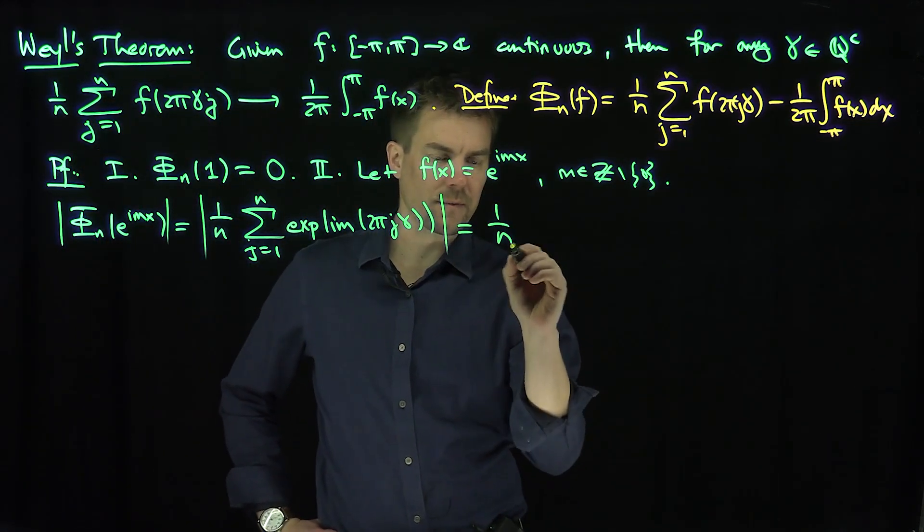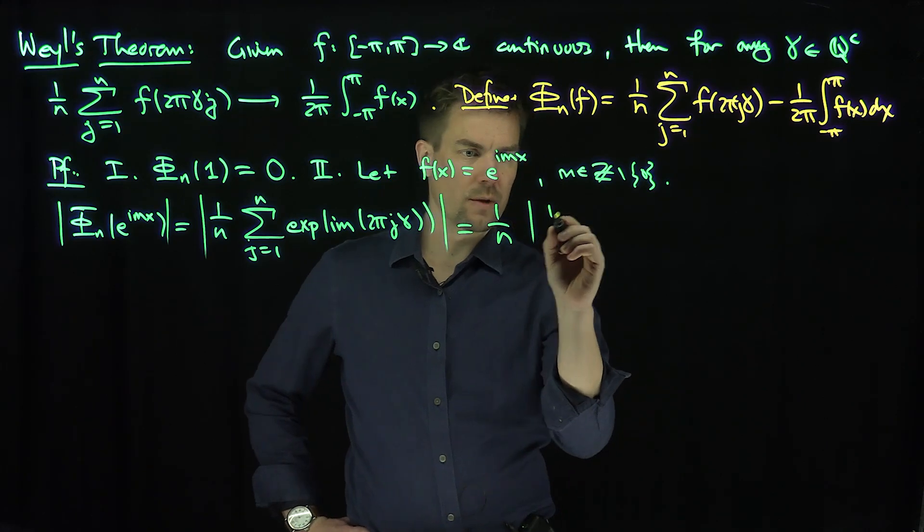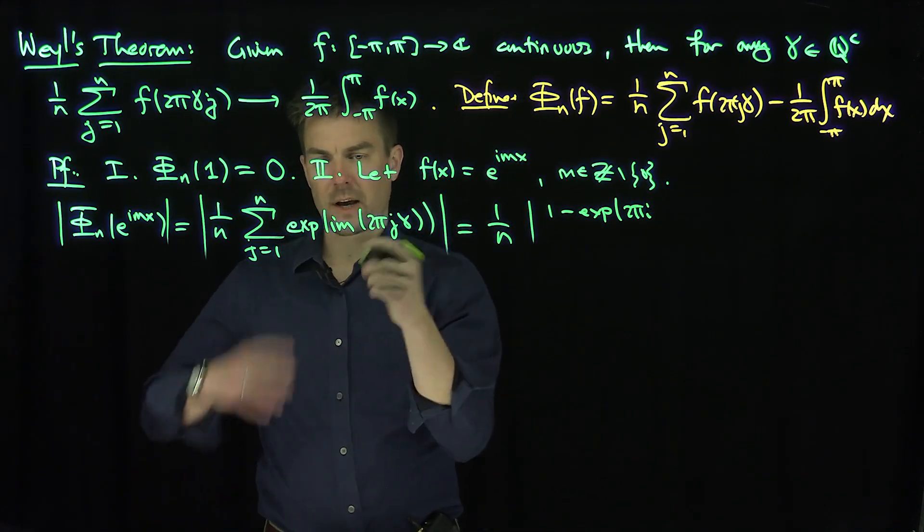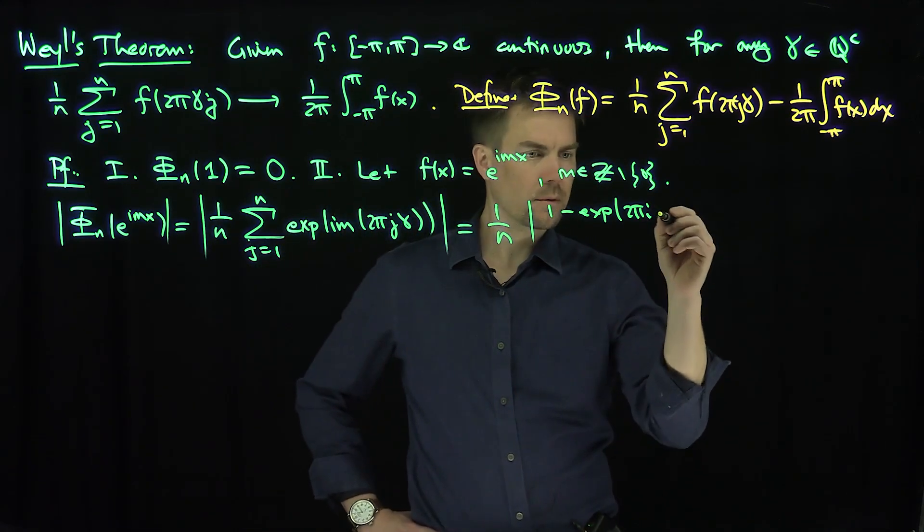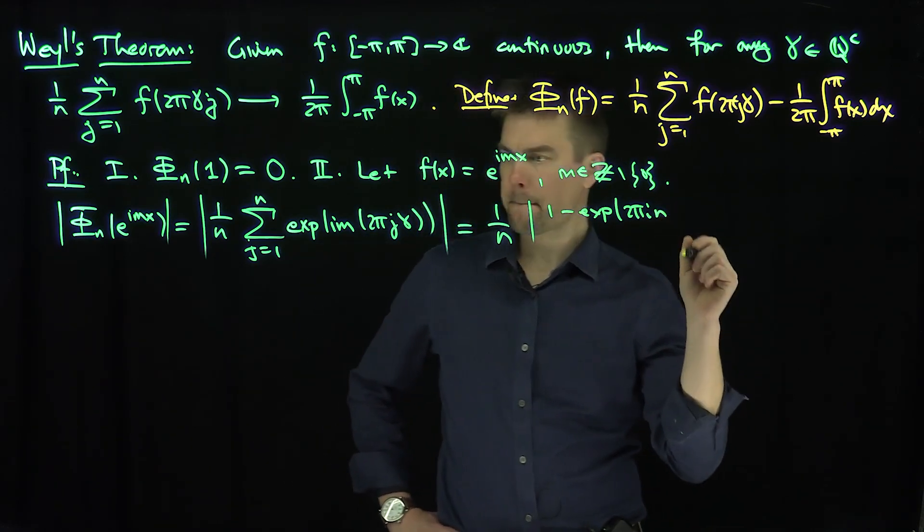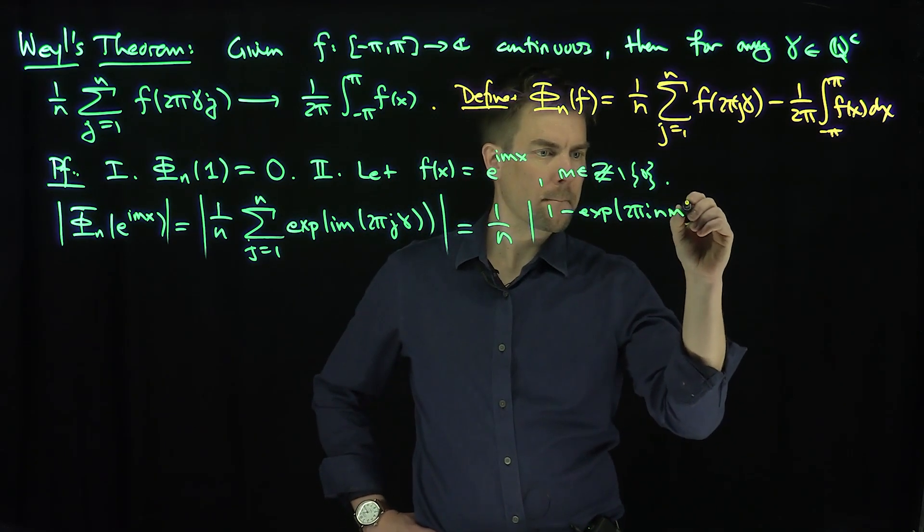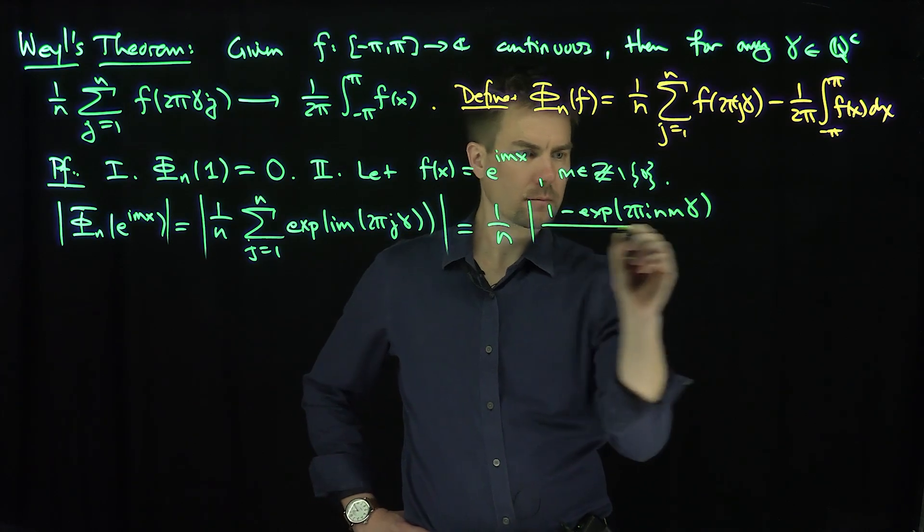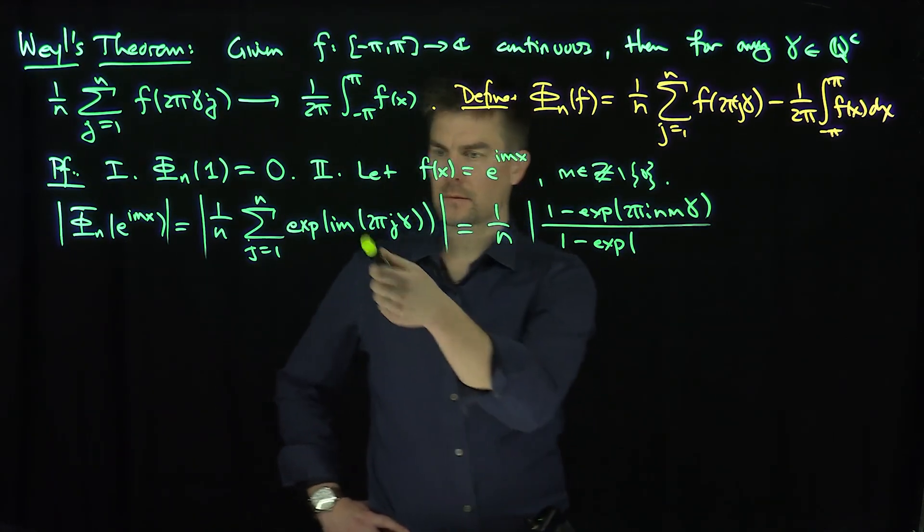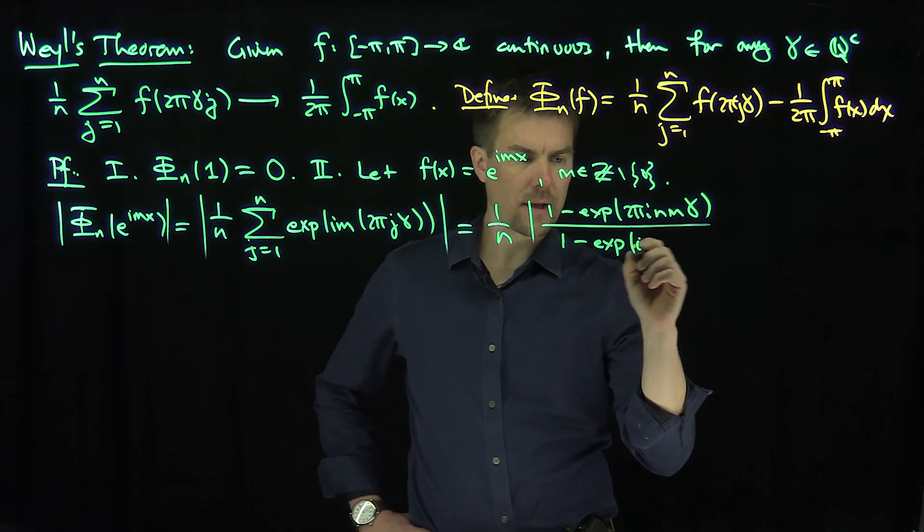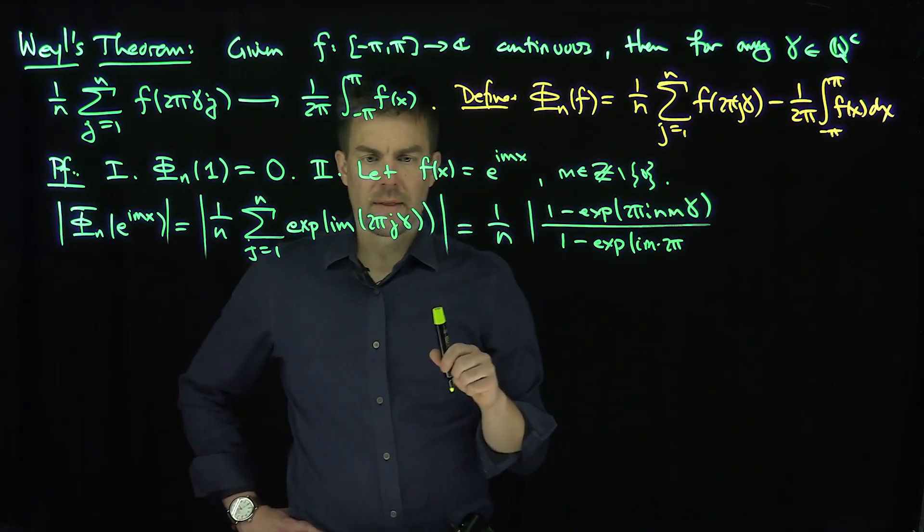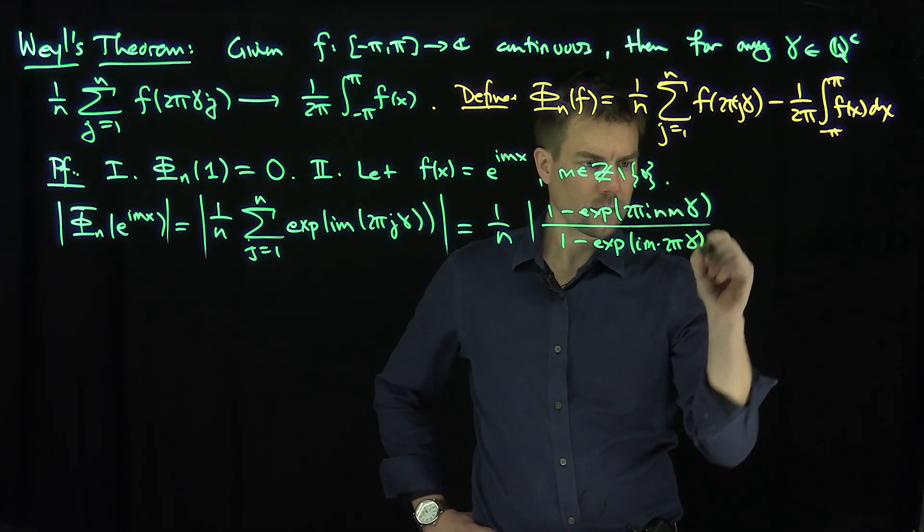So this is going to be 1 over n. And then the first term is unimodular, so I can write this as just 1 minus the exponential 2πi. Now, ordinarily, I go up to n plus 1, but I can pull out the first term and write this as n, nmγ over 1 minus the exponential of i and then m and then 2π and then γ, like so.